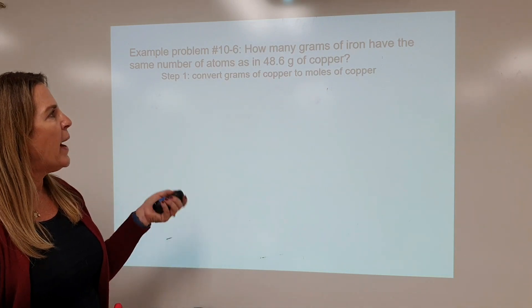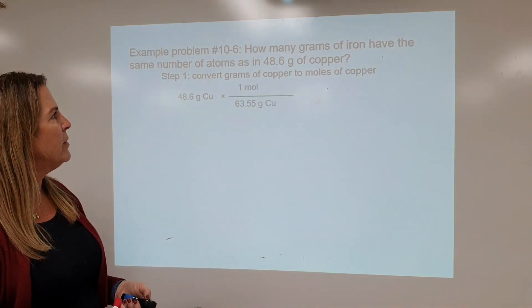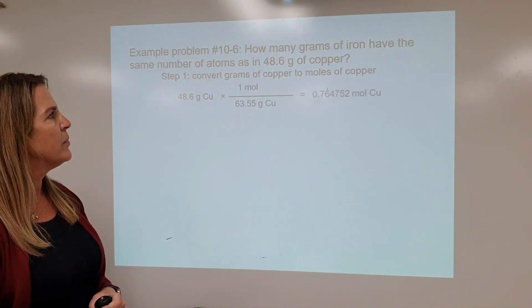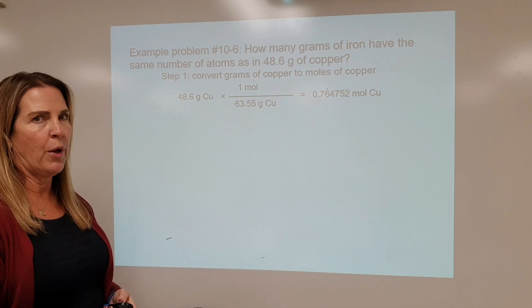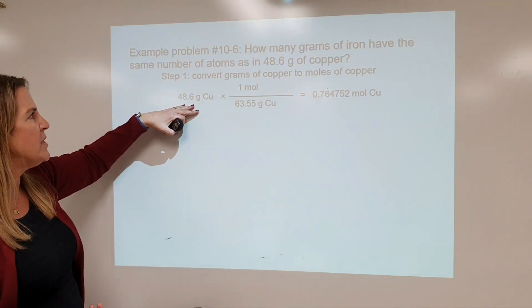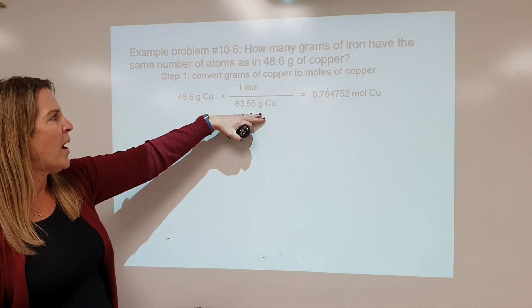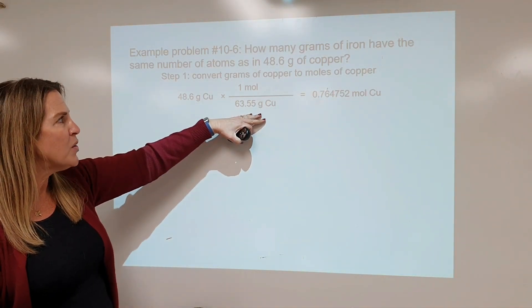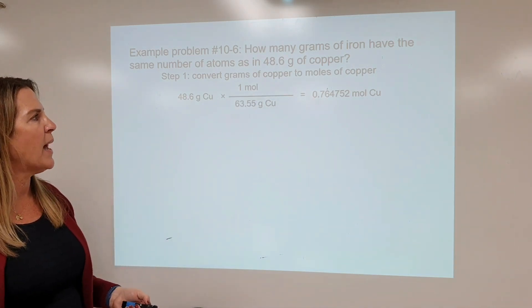Step one: convert your grams of copper to moles of copper. We should not round. We're going to take our 48.6 grams and divide it by the molar mass of copper to get 0.764752 moles of copper.